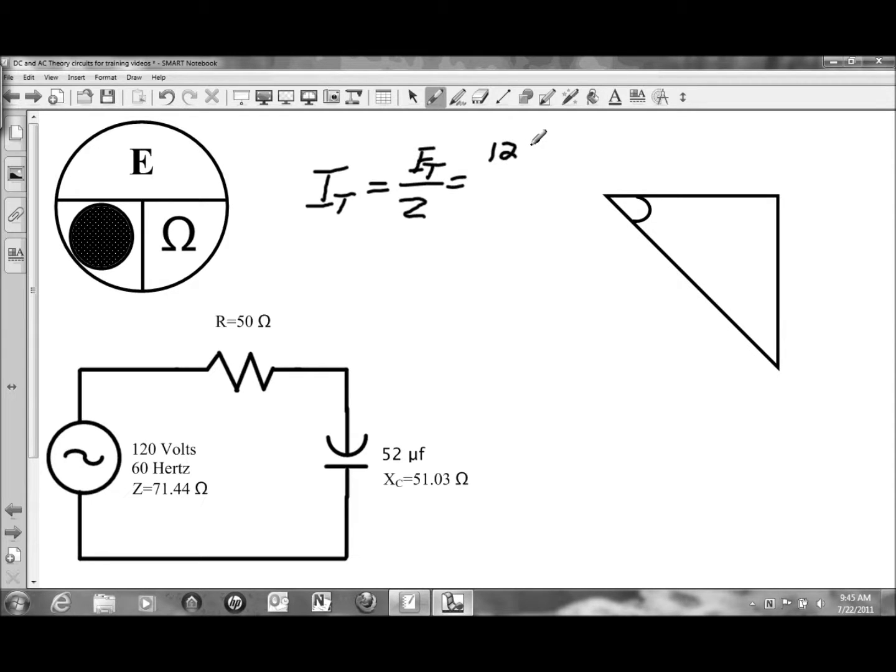Source voltage of 120 volts divided by 71.44 ohms of impedance will give us a total current flow of 1.68 amps of current. And that will be the same current flow throughout the entire circuit as current is unchanging in a series circuit. So we have 1.68 amps of current flow at the capacitor and at the resistor.